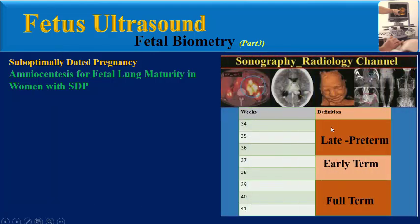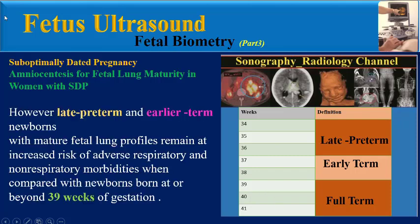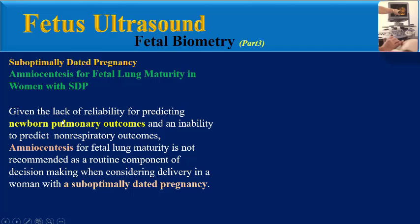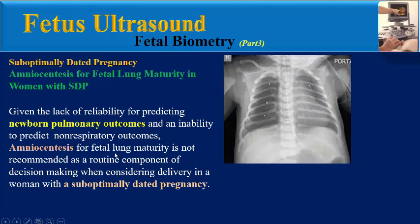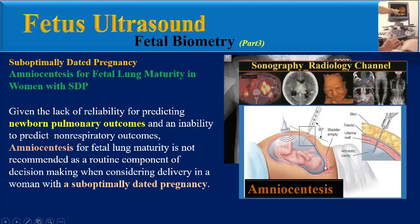Historically, amniocentesis has been used to assess fetal lung maturity before planned delivery of a fetus lacking an accurate gestational age determination. We should be familiar with these terms: late preterm includes 34 to 36 weeks of gestation; early term includes 37 to 38 weeks of gestation; and full term includes 39 weeks of gestation and beyond. Late preterm and early term newborns with mature fetal lung profiles remain at increased risk of adverse respiratory and non-respiratory morbidities compared with newborns born at or beyond 39 weeks.